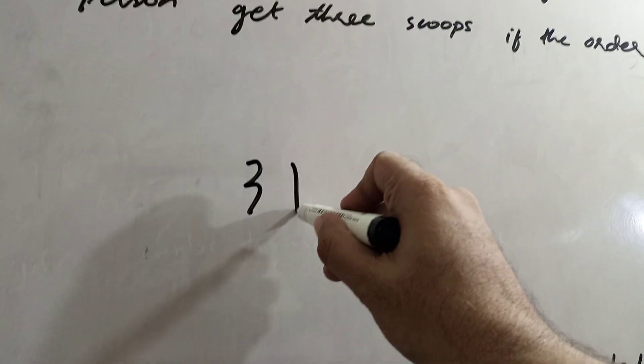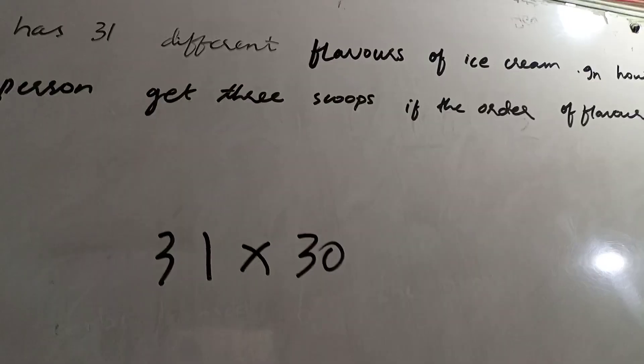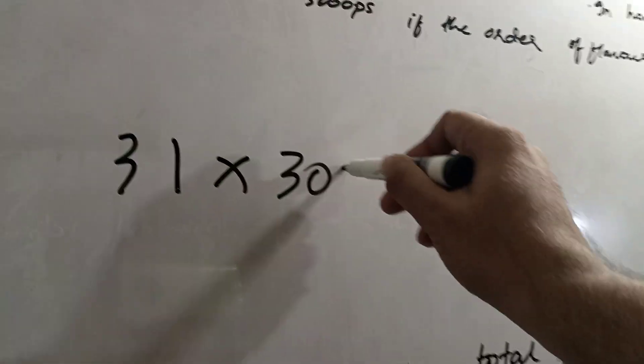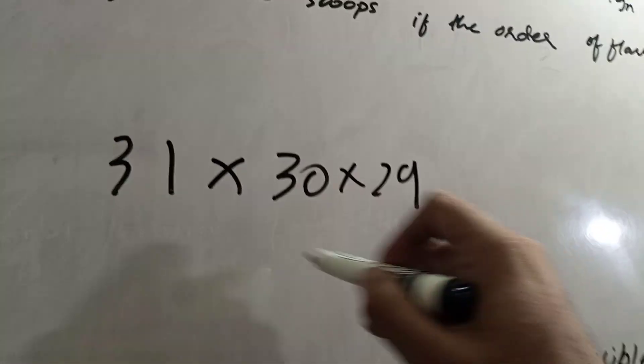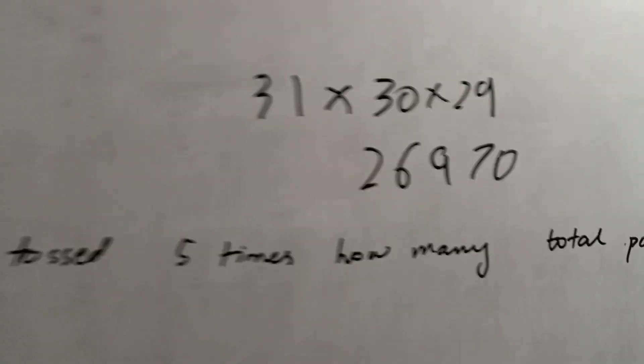31 different flavors. So see, it's a product. The first scoop has 31 choices, the second person has 30, the third person is 29. Their product is 26,970. The calculation is like this.